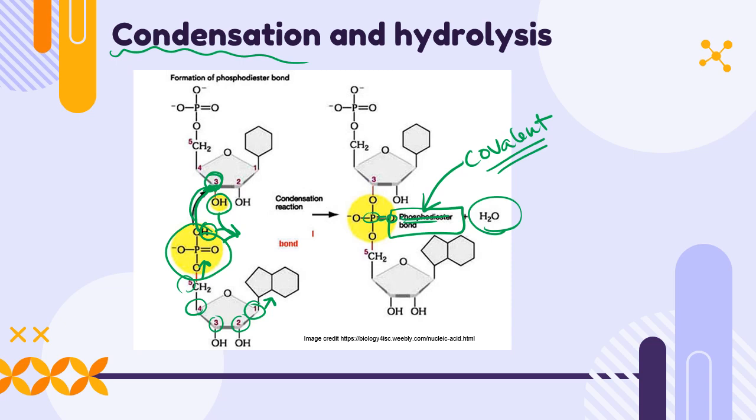This phosphate group is going to bind to carbon number three of the next pentose sugar. When we get to replication, we'll need to think about these carbons a lot, so start putting them in your brains now. Carbon five with the phosphate binds to carbon three of the previous nucleotide.